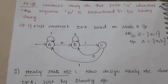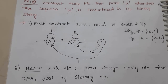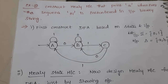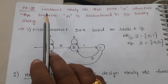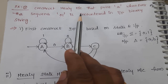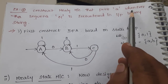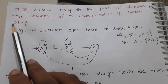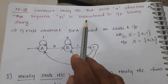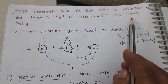Hi everyone. In this session, let us see one more example on Mealy machine. The problem is: construct a Mealy machine that prints 'A' whenever the sequence 01 is encountered in an input binary string.